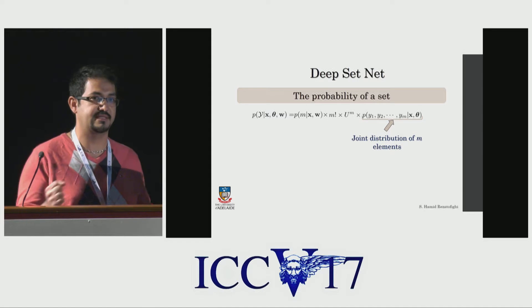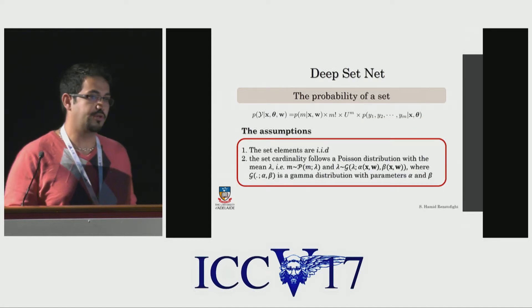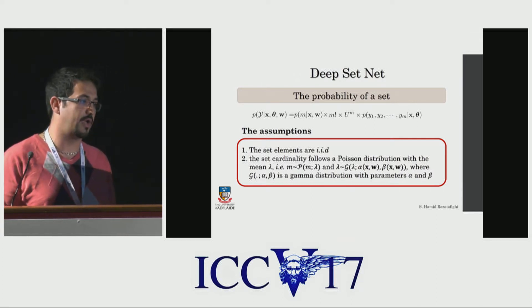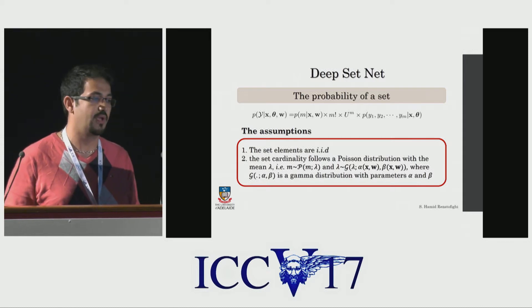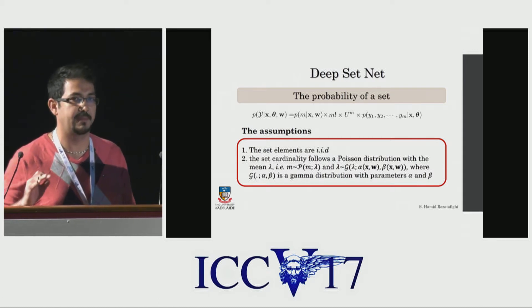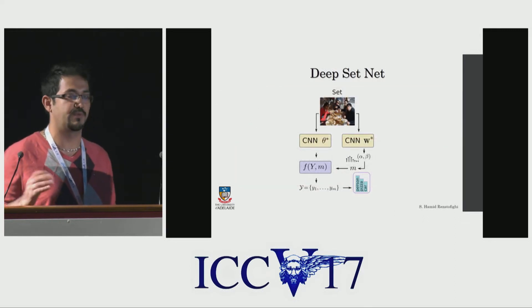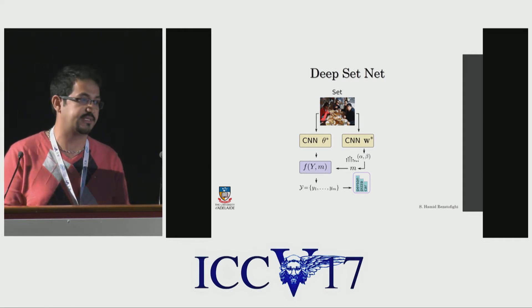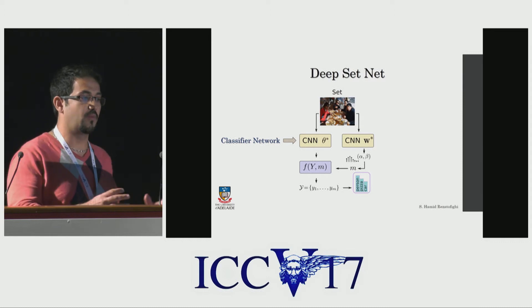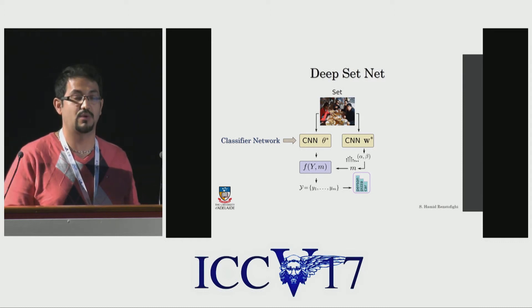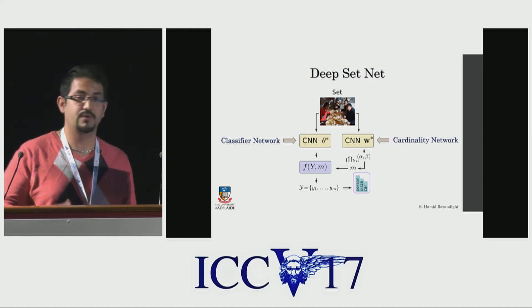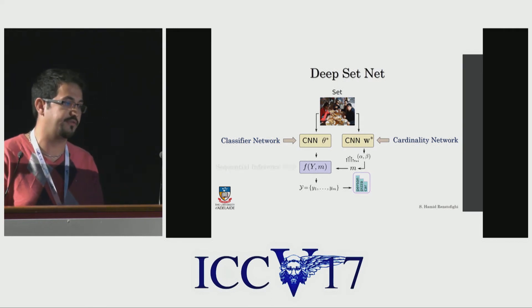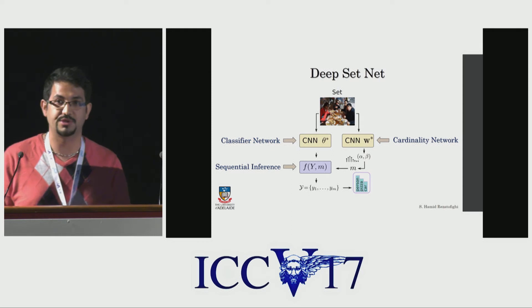Note that the dimensionality is not fixed and can change. To make the problem amenable to mathematics and implementation, we make assumptions: set elements are IID, and the set cardinality follows a Poisson distribution whose mean itself follows a gamma distribution, which we estimate from the deep neural network. In summary, we have a block diagram showing how we predict the set. We have two neural networks: one, called the classifier network, estimates the distribution over the set elements themselves, and another network predicts the cardinality as a discrete distribution. We combine these two using inference to generate the final sets.